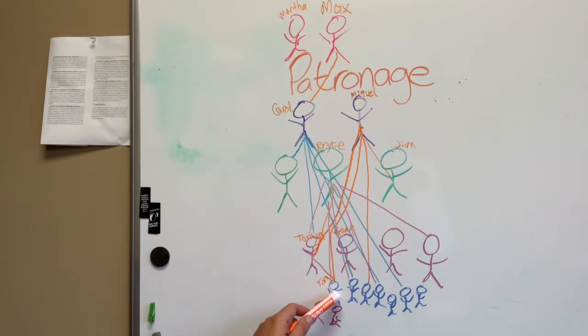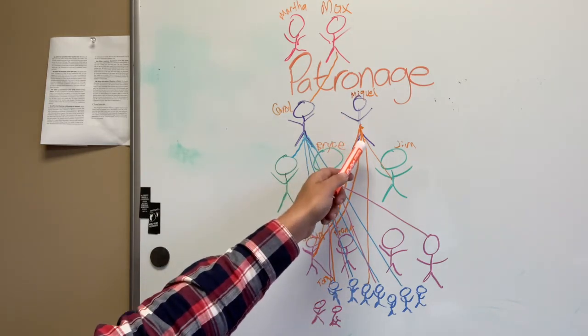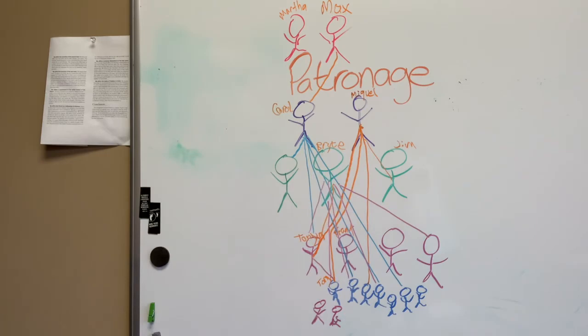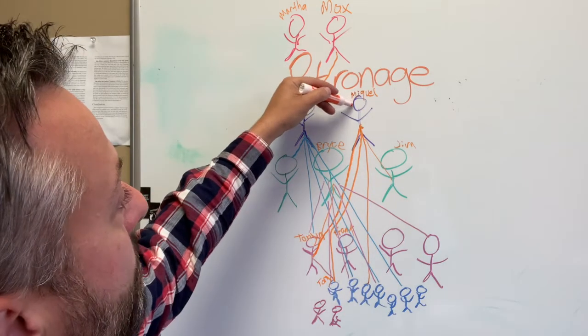Let's say Tony down here makes shoes for a living and he's been importing his leather from someplace out of town and the prices just keep going up and it's getting ridiculous and he's going to go out of business and be without a job if he doesn't get some leather at a better price. So because Tony is a client of Miguel's, he's going to go to Miguel and say, Miguel, I know that you have a relationship with Max.